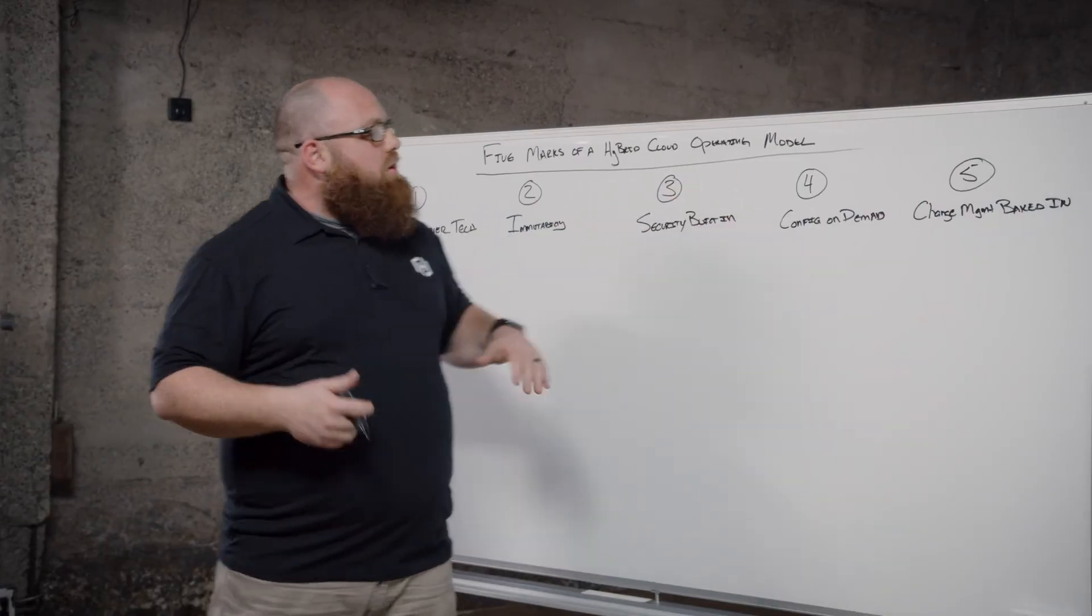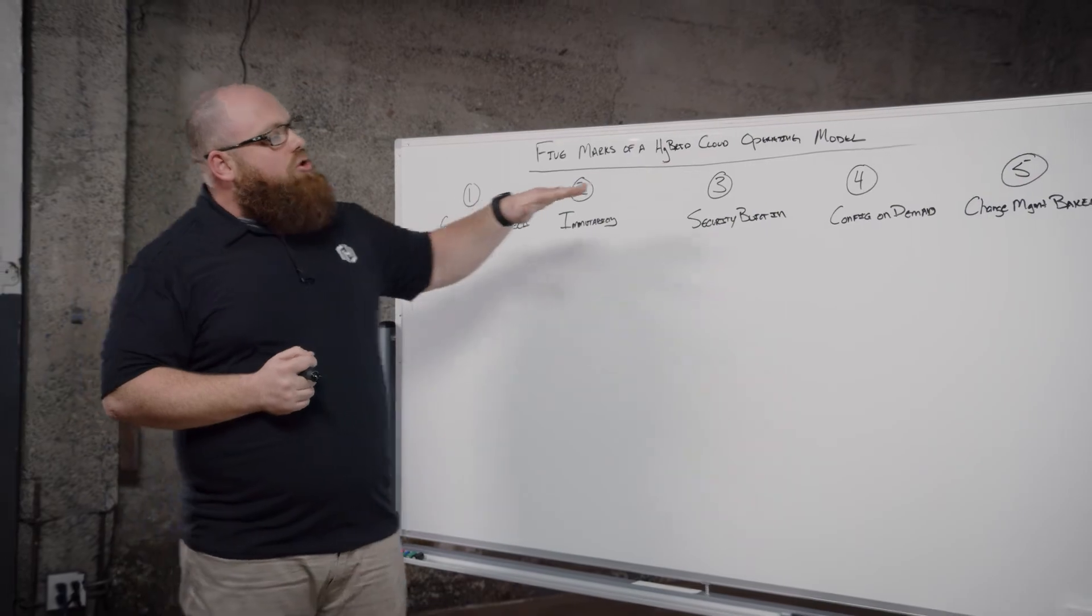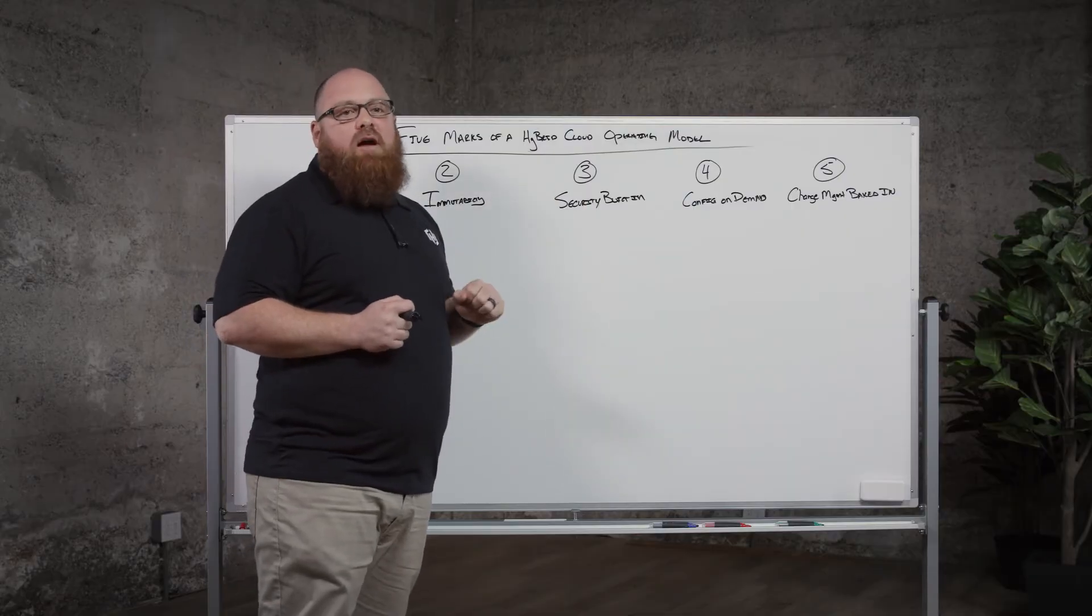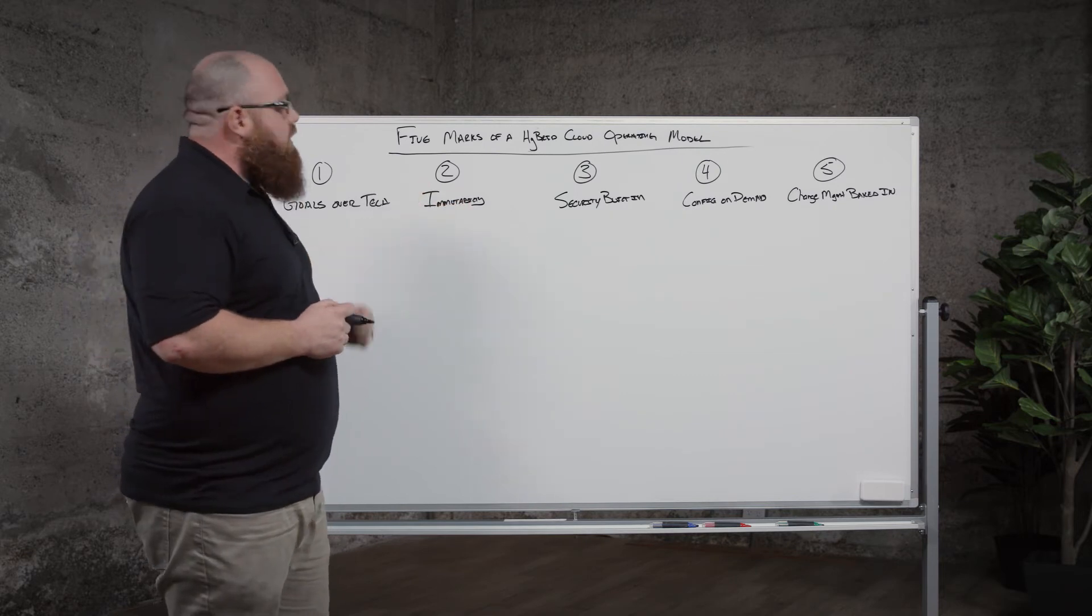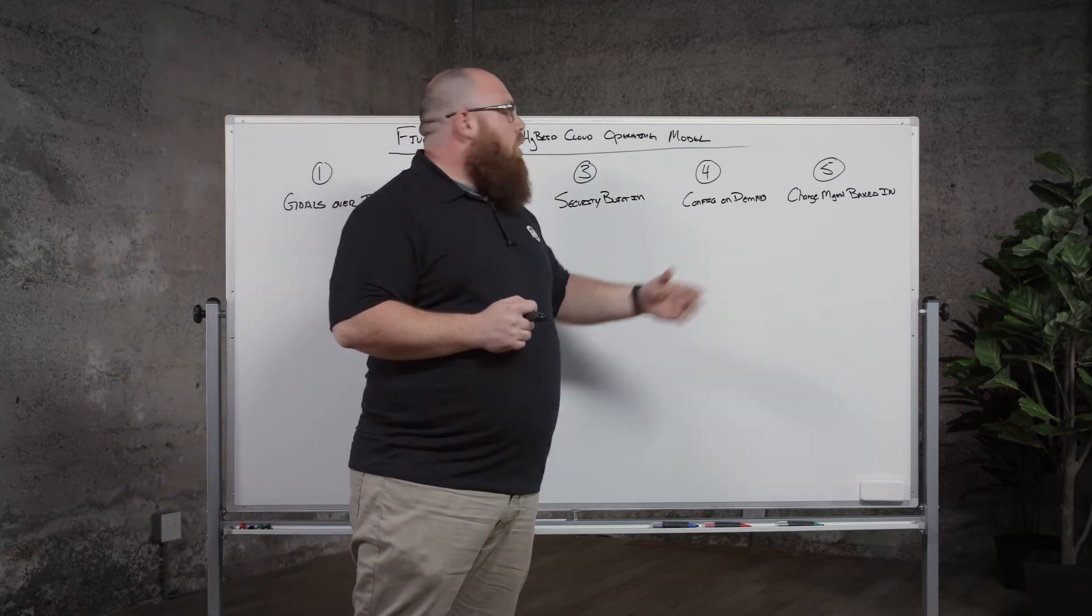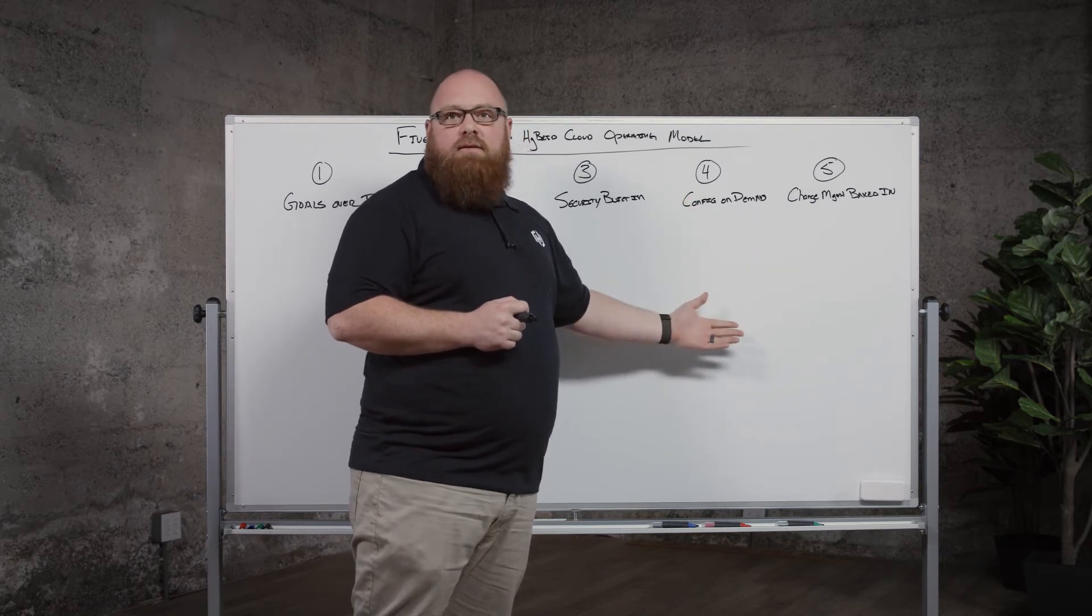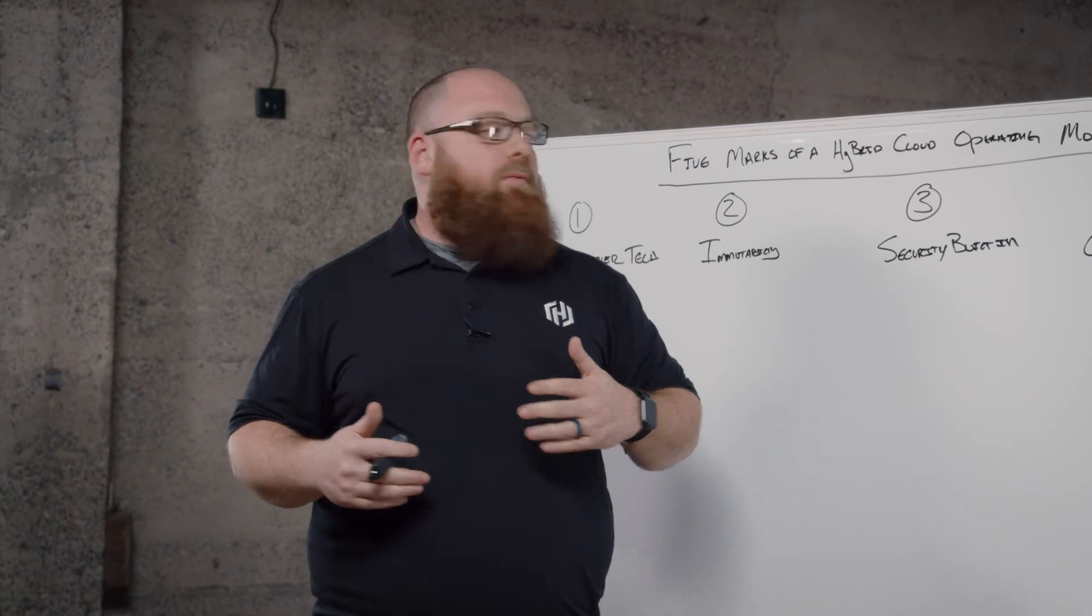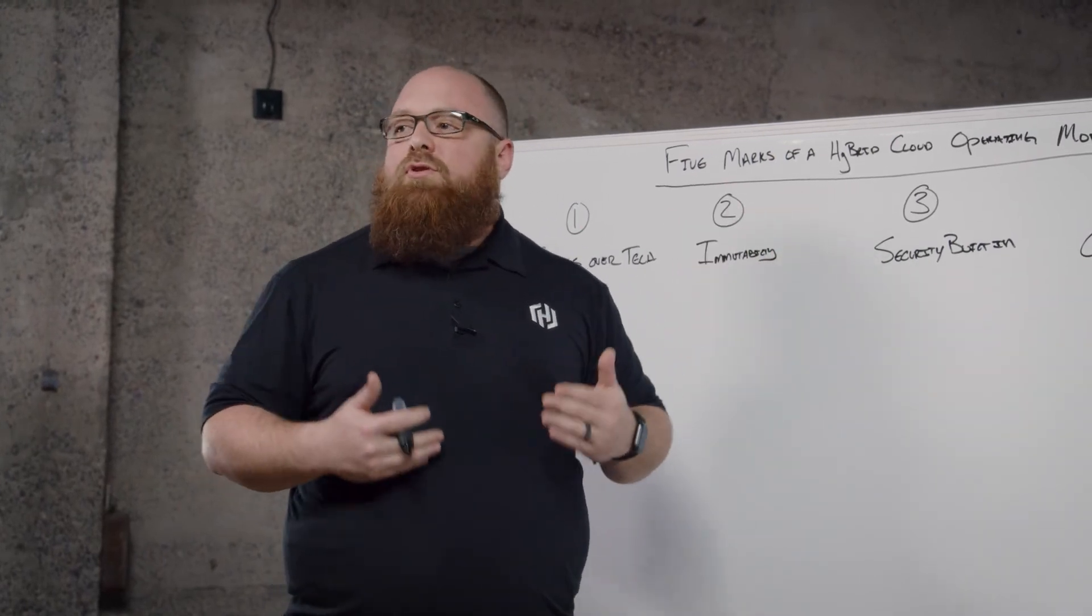And so as you start to move through this idea of a hybrid cloud operating model, start to measure where you are in the context of these five marks. Be honest with yourself and actually grade and say, how are we in immutability? Or can we actually change configuration on demand? Or is there a long tail process that actually takes to implement this? And as you look at these, you can actually begin to see these as guiding principles as you move through this journey.